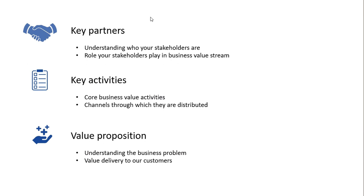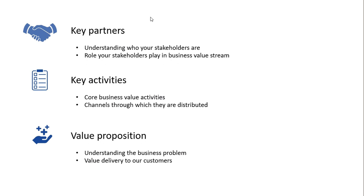The third element is value proposition: what's the value proposition of open data for each key partner? We need to understand the core business problems of key partners, what activities the public sector agency does that adds value to those partners, and how the key partners deliver value to their own customers. Key resources refers to what resources the public sector agencies have access to and how they can be leveraged to deliver the business value of the open data program — importantly, what is the link between those resources and the key activities.